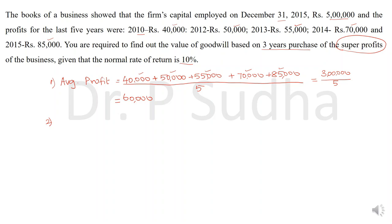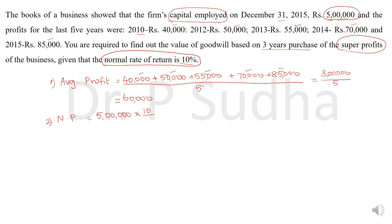After calculating average profit, the second step is to calculate normal profit. Normal profit equals capital employed — which is 5 lakhs — multiplied by the normal rate of return of 10%, that is 10/100. So the normal profit is 50,000.